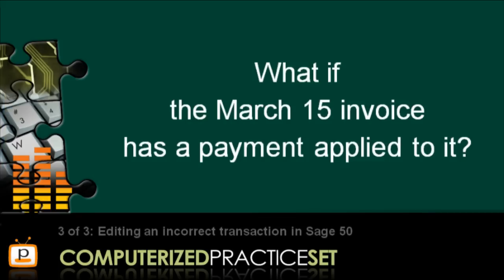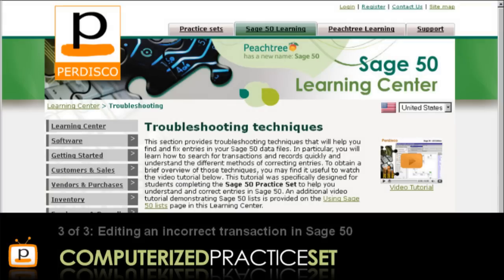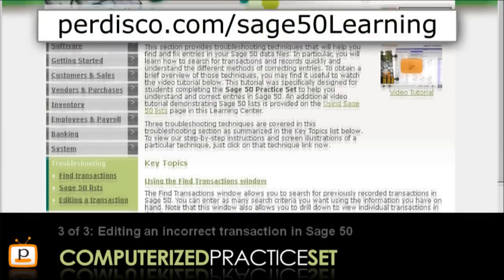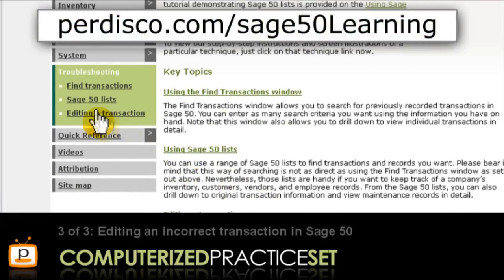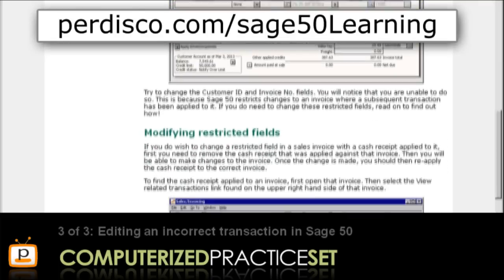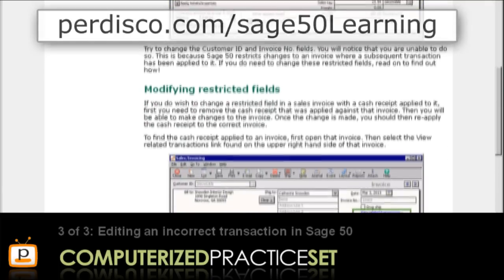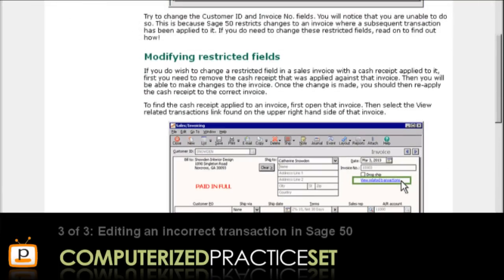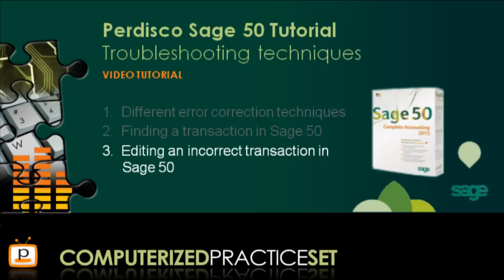Next, what if the March 15 invoice has a payment applied to it? In this case, you may have to perform additional steps to modify this invoice. To learn more about those steps, go to our Learning Centre, where you can find detailed instructions on how to change the Customer ID of a fully paid invoice. So that's a quick overview of the editing a transaction process.